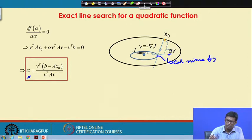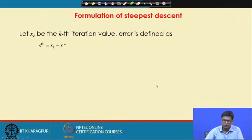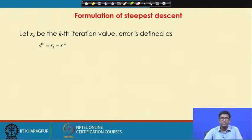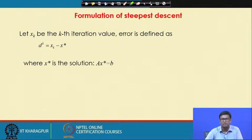We now think about proposing an algorithm for iteratively solving Ax = b, or finding the minimum of j, which is called the steepest descent algorithm. Let k denote the kth iteration value. The error is defined as d_k = x_k minus x*, where x* is the solution of Ax* = b — the location where j is minimal.